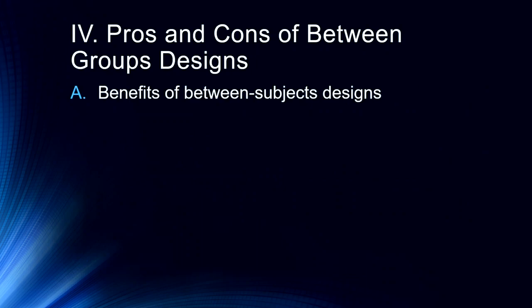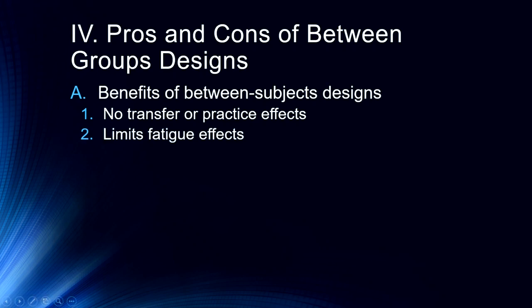So that gets us to some pros and cons of between groups designs. Some benefits. We don't have any transfer or practice effects so we don't have to worry so much about counterbalancing for order, that sort of thing. There are still counterbalancing issues in between subjects designs. Oftentimes these are materials. So for example, if we're doing a recognition memory task, we still have to counterbalance for old and new items, that sort of thing. We get limited fatigue effects because again participants aren't participating across the entire experiment. They're only in their one condition. We get limited demand characteristics because our participants are only getting a peak at their condition, not the entire study. So that's important.